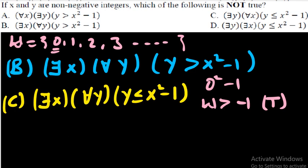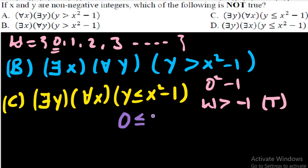Choice (c) says: there exists y, for all x, y ≤ x² − 1. Can we find a fixed y that is less than or equal to x²−1 for every non-negative integer x? The smallest candidate for y is 0, since we need the minimum possible y from non-negative integers.